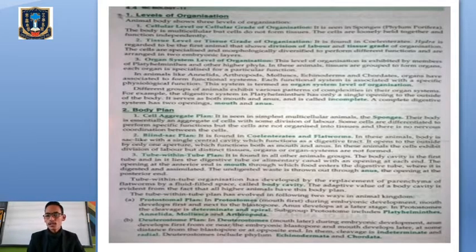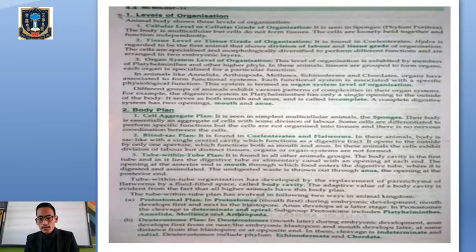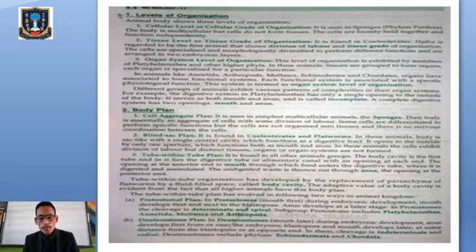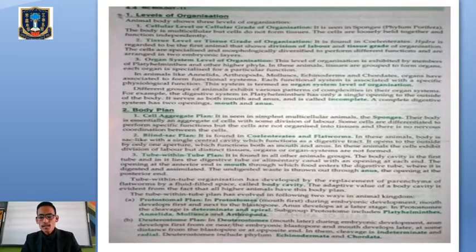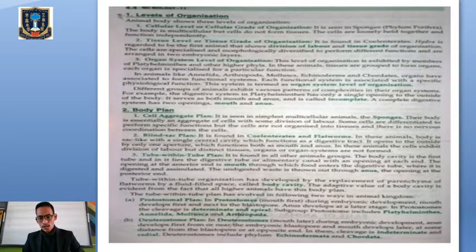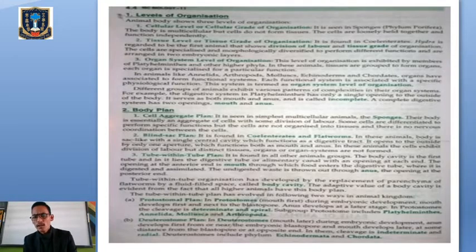In sponges, though they are multicellular, the cells do not form tissues — so they have cellular level organization. The second level is tissue level, where groups of cells with similar functions form tissues; mainly found in Coelenterata, such as Hydra. The third level is organ system level, where tissues form specific organs, seen from phylum Platyhelminthes onward to the higher phyla.